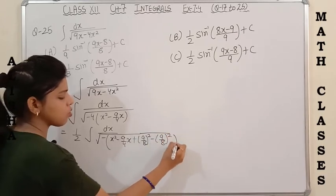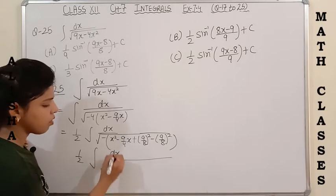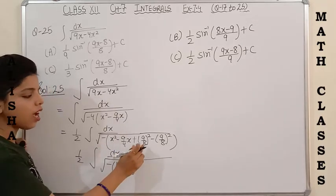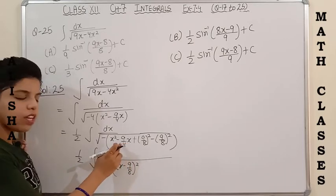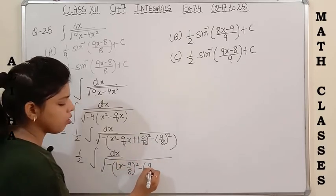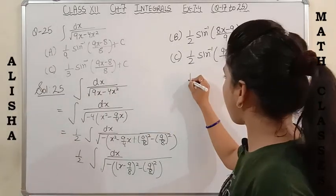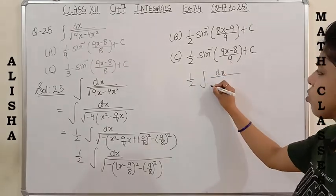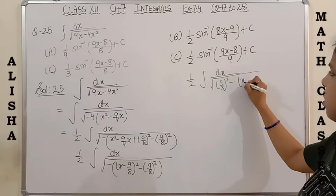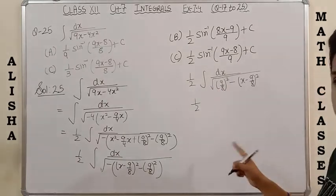The coefficient of x is 9/4; half of that is 9/8. So we add and subtract (9/8)². This gives -(x - 9/8)² inside because the coefficient of x is negative. The leftover term is -(9/8)², which on shifting the negative sign gives (9/8)² - (x-9/8)². So the integral becomes (1/2) times integration of dx upon √[(9/8)² - (x-9/8)²].